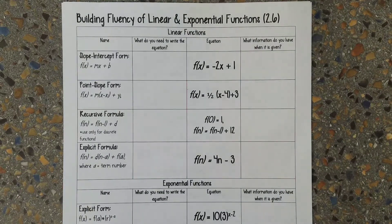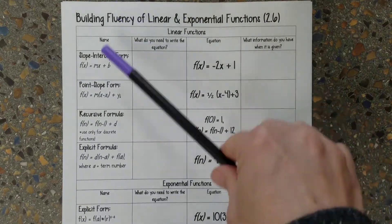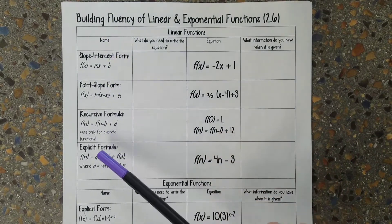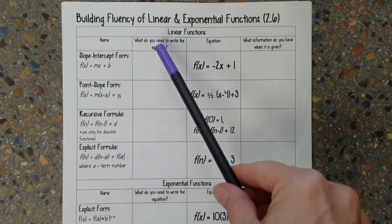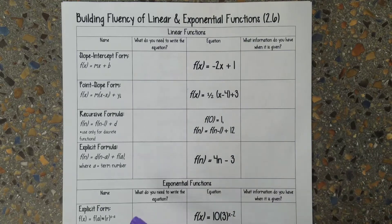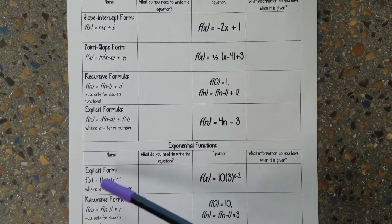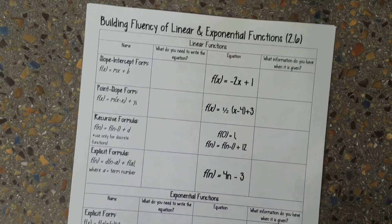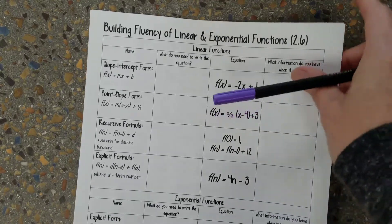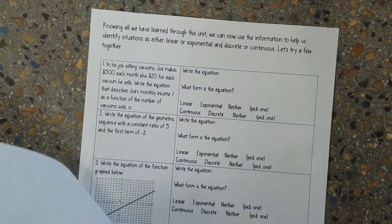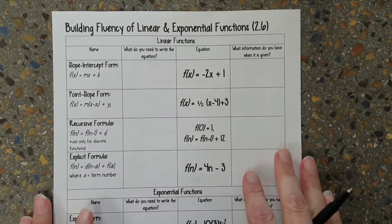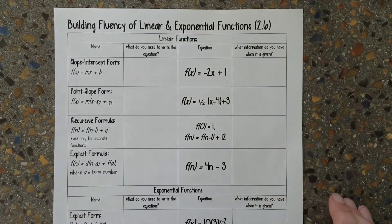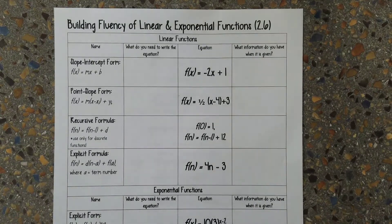So what we're going to talk about first is the different types of formulas that we can use to do linear functions, and then we'll come down here and talk about the two different kinds we can use for exponential functions, and then we're going to do some example problems together. And then you'll do some on your own. This lesson might be a little longer than normal because I really wanted to make sure I hit some stuff with you guys so that you really understood it.